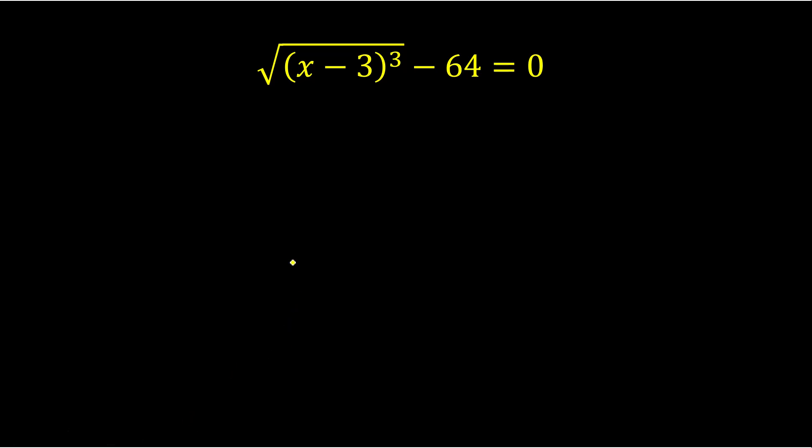Alright, so let's look at this question. We have square root of (x-3)³ minus 64 equals 0. So let's see what we can do. Let's keep the square root on the left-hand side and send this one to the other side, so I'll get something like...